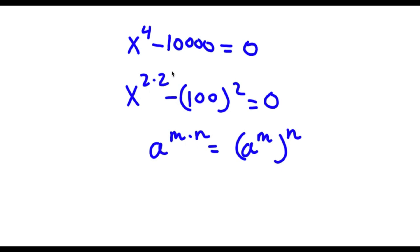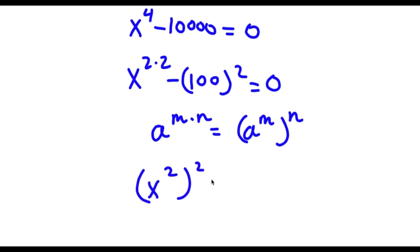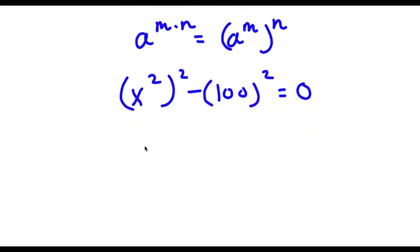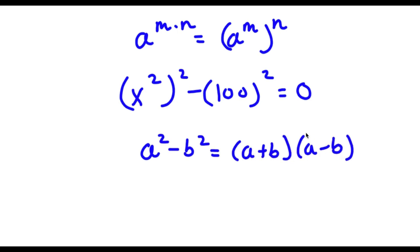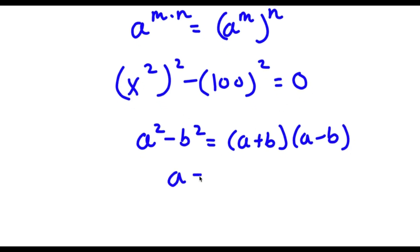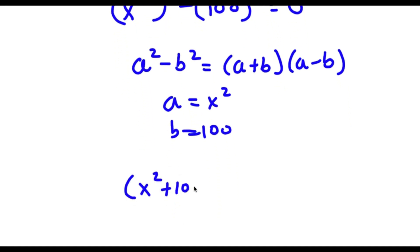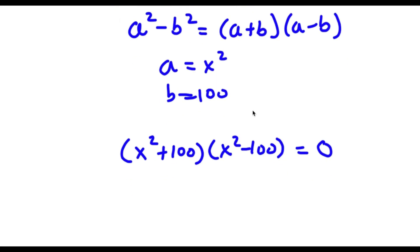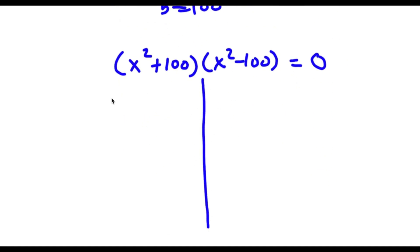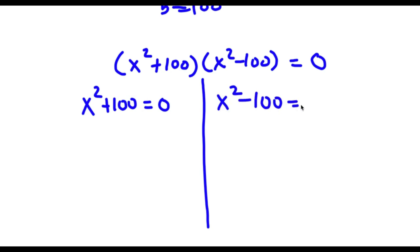Using the difference of squares rule — a^2 minus b^2 equals (a plus b)(a minus b) — where a equals x squared and b equals 100, I get (x squared plus 100) times (x squared minus 100) equals 0. This gives me two equations: x squared plus 100 equals 0, and x squared minus 100 equals 0.